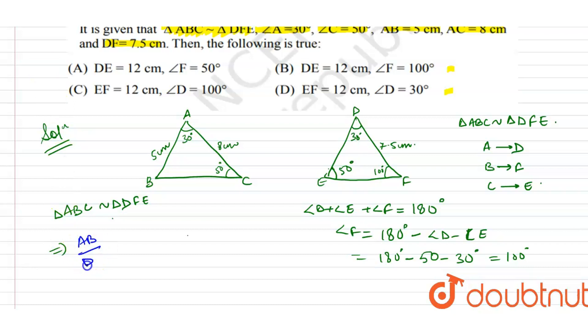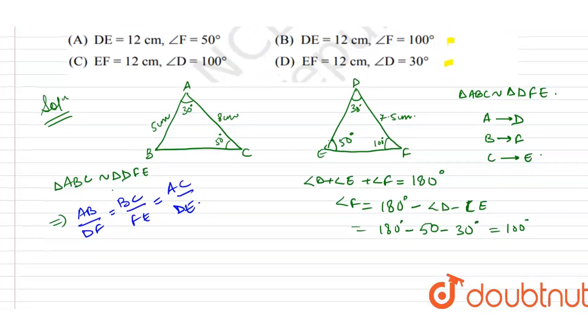AB upon DF equals BC upon FE equals AC upon DE. Now keep the values. It will be 5 upon 7.5 equals 8 upon DE. So DE equals 8 into 7.5 divided by 5.